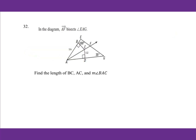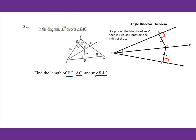For number 32, AF bisects angle EAG. Find the length of BC, AC, and angle BAC. By the angle bisector theorem, if a point is on the bisector of an angle, then it is equidistant from the sides of the angle. Since A is on the angle bisector, the distance to each side is the same. Going back to the diagram: CD equals BC. So BC equals CD, which equals 12.